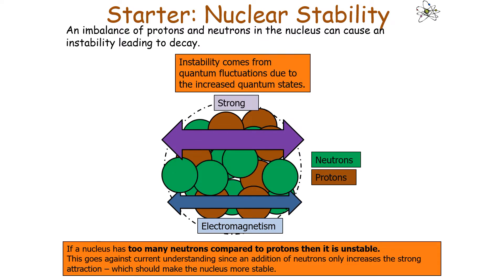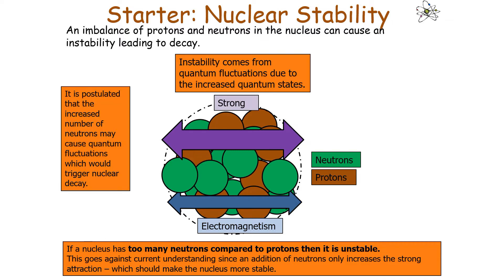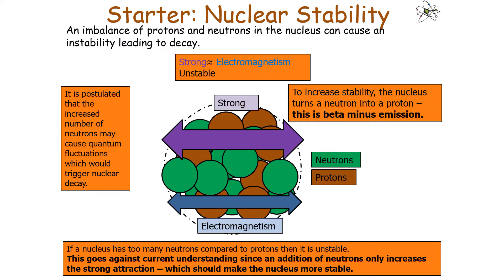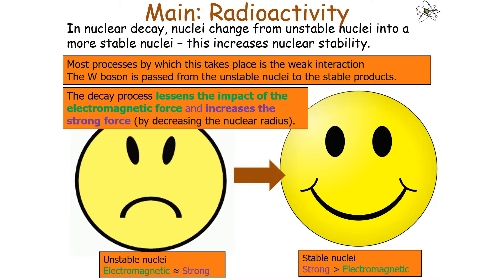Finally, if a nucleus has too many neutrons compared to protons, it is unstable. This instability arises from quantum fluctuations due to the increased quantum states of having a large number of neutrons. It is postulated that these fluctuations can trigger nuclear decay. To increase stability, the nucleus turns a neutron into a proton — which is beta minus emission. In all cases, nuclei change from unstable to more stable configurations, increasing nuclear stability.